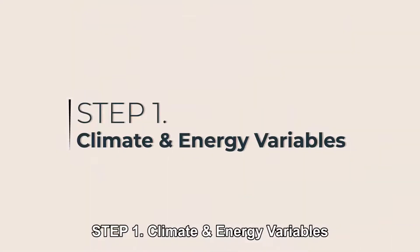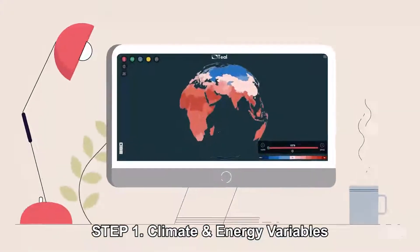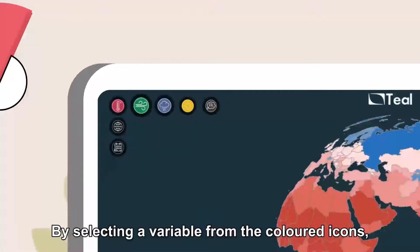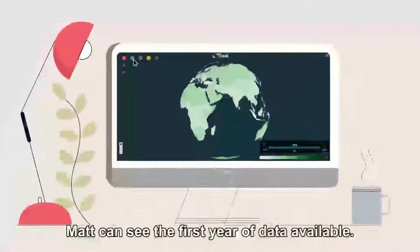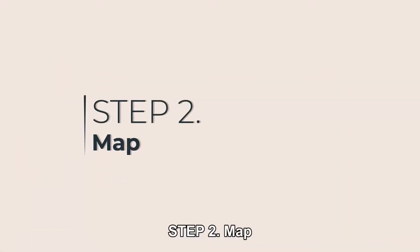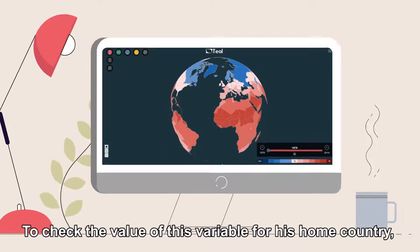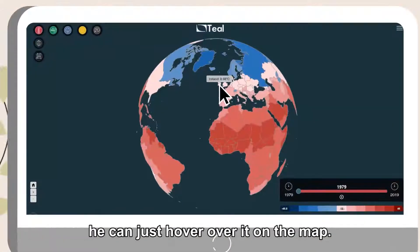Step 1: Select a climate and energy variable by clicking on the colored icons. Matt can see the first year of data available. Step 2: To check the value of this variable for his home country, he can just hover over it on the map.